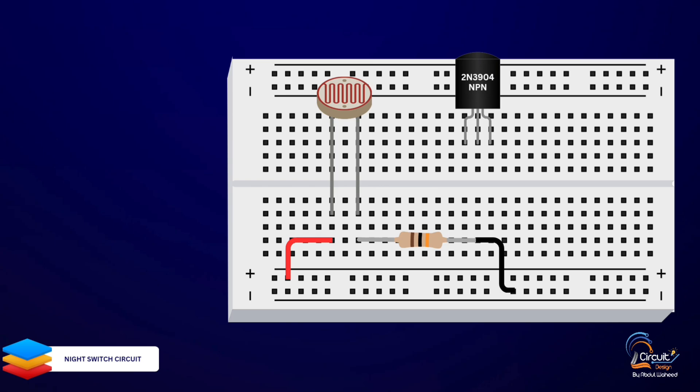Connecting the base of the transistor. Connect the junction between the LDR and the resistor to the base of the transistor. This connection will control the transistor based on the light level.